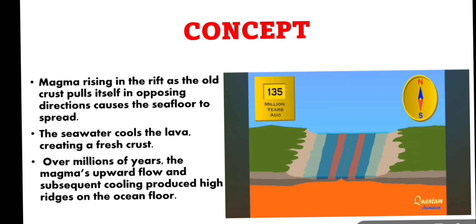According to Harry Hess, magma rising in the rift as the old crust pulls itself in opposing directions causes the seafloor to spread. The seawater cools the lava, creating a fresh crust. Over millions of years, the magma's upward flow and subsequent cooling produced high ridges on the ocean floor.